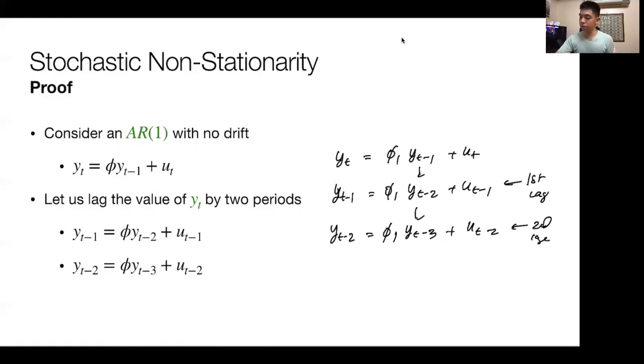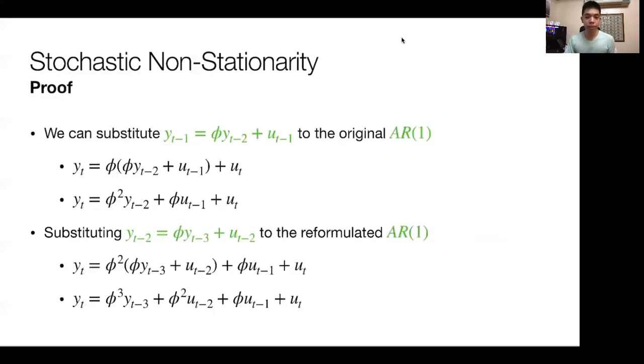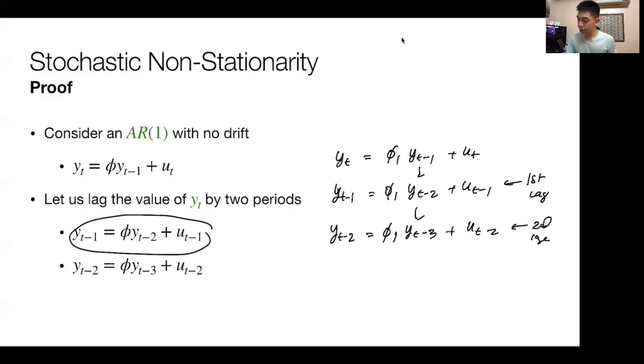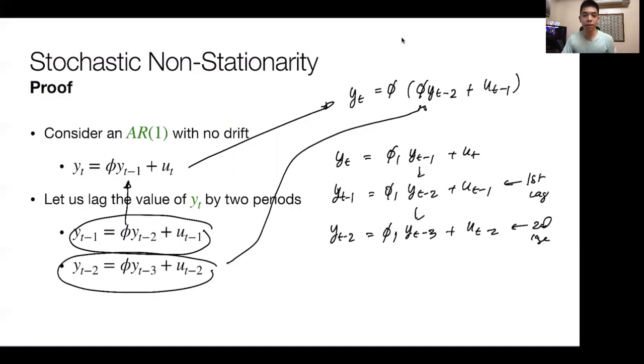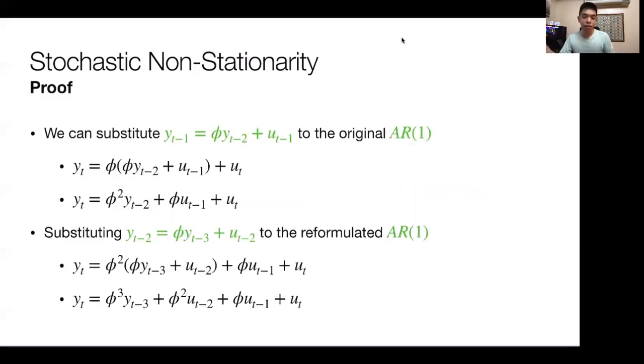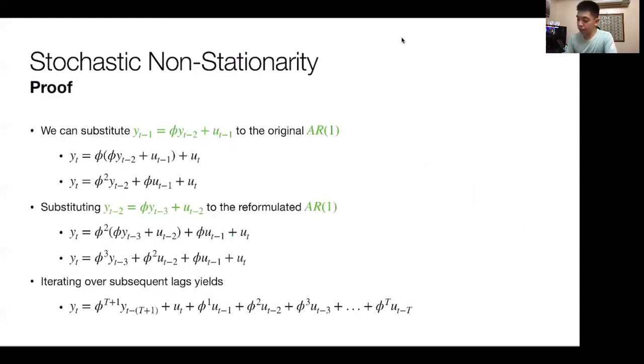You're just moving from this period, lagging it more. Now, you can substitute, essentially, this equation into here. In that way, this becomes yt equals phi times yt minus 2 plus ut minus 1. You can substitute that. And in effect, you could substitute this equation in here as well. You can keep on substituting for as long as you'd like. Substituting it on and on gives you the reformulated AR model.